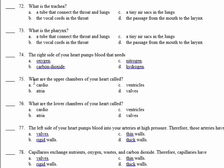Number 75: what are the upper chambers of your heart called? The heart has four chambers — two upper chambers called the atria and two lower chambers called the ventricles. So the upper chambers are called atria. 75, B. Number 76: what are the lower chambers called? Ventricles.